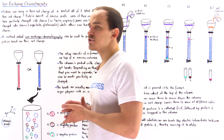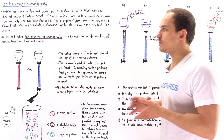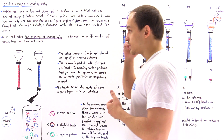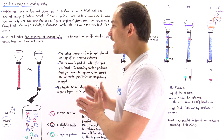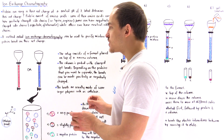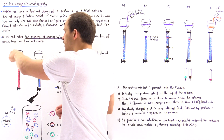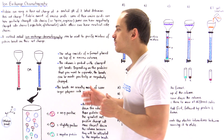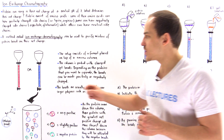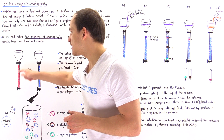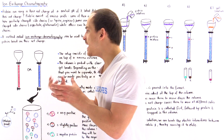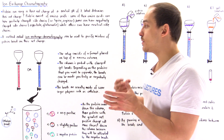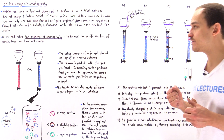The setup in ion exchange chromatography is very similar to that of gel filtration chromatography. We have two types of setups. In each setup, we have a funnel placed on top of a long column, and inside that column we have special gel beads. In one case, the gel beads are made so that they have a positive charge, and in the other case, the gel beads are made so that they have a negative charge.